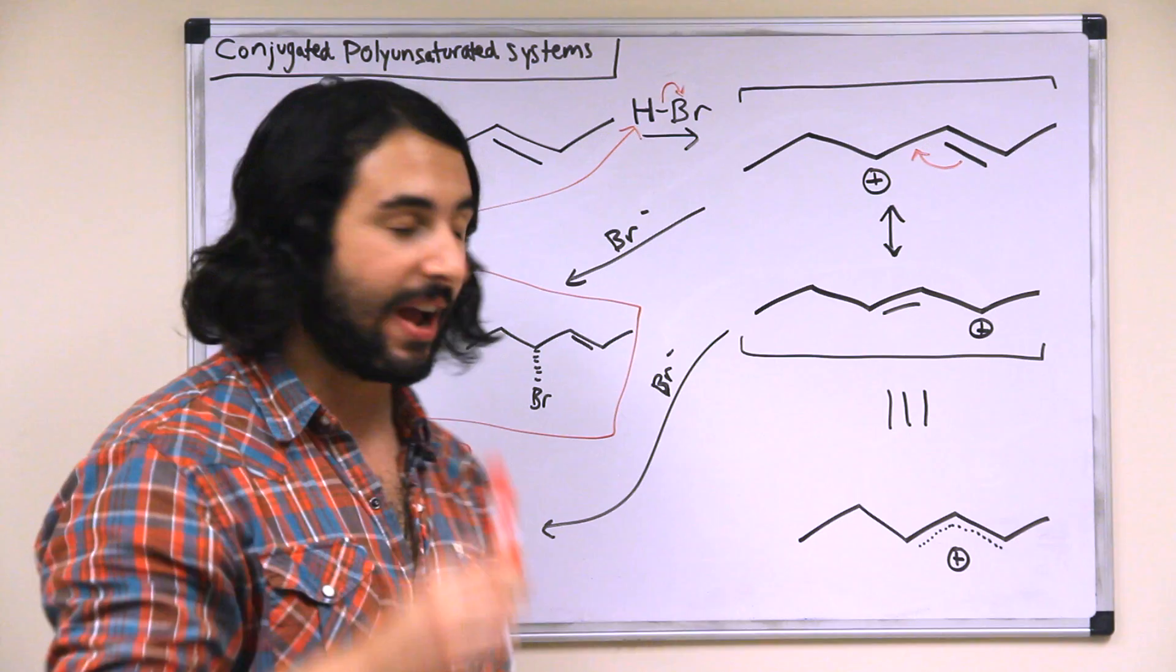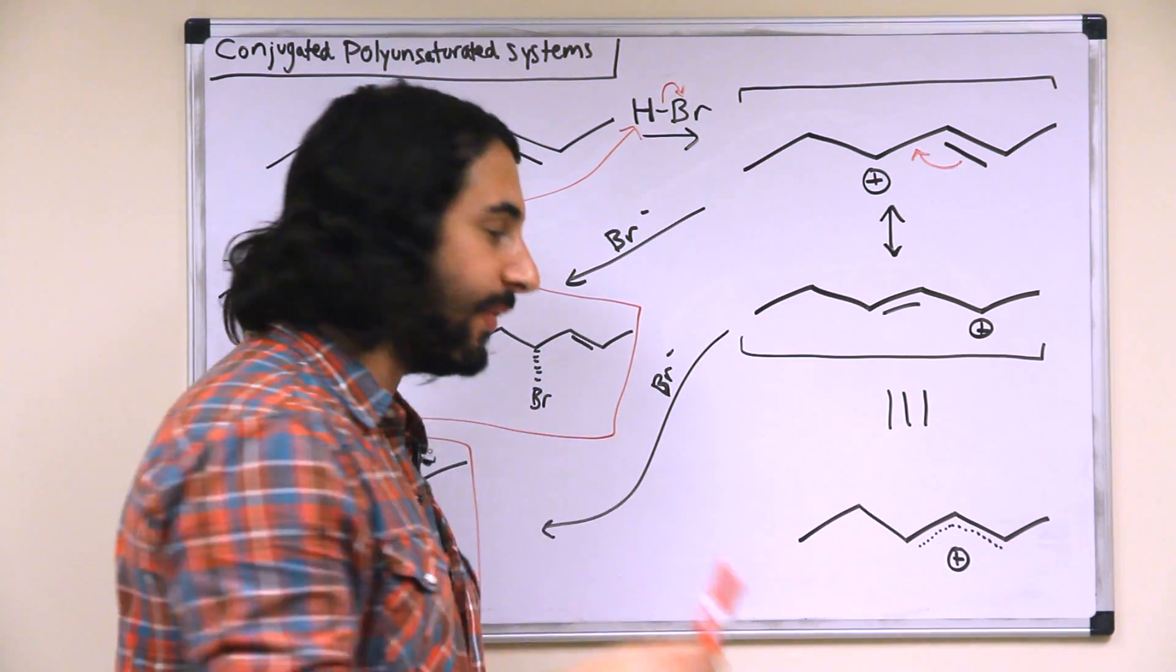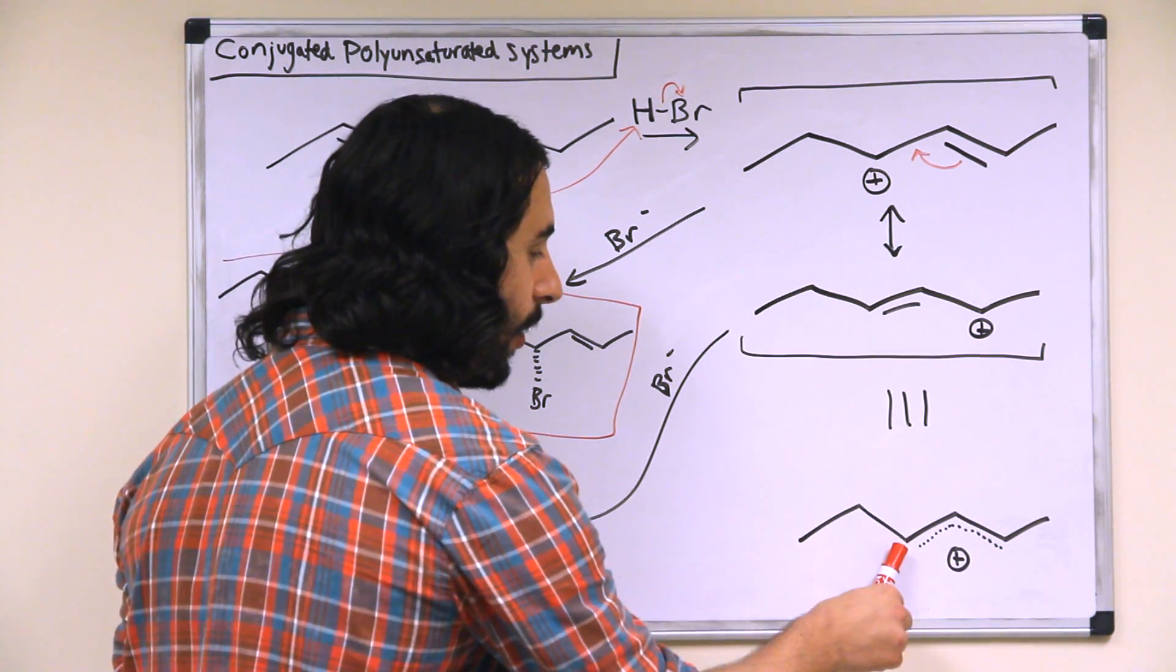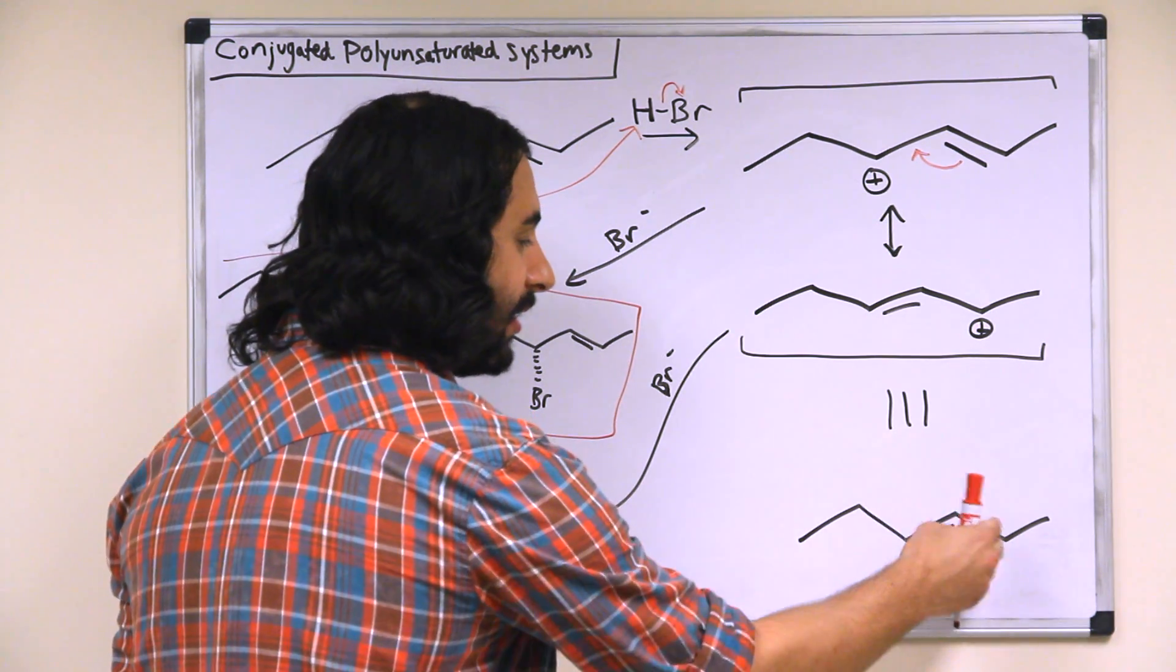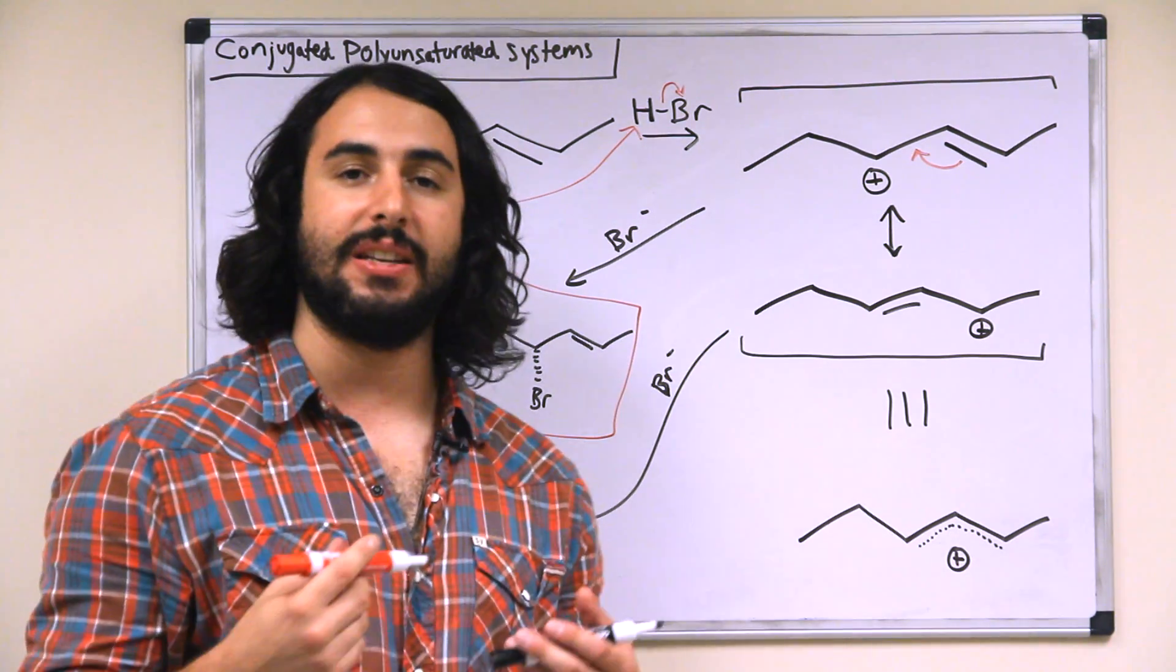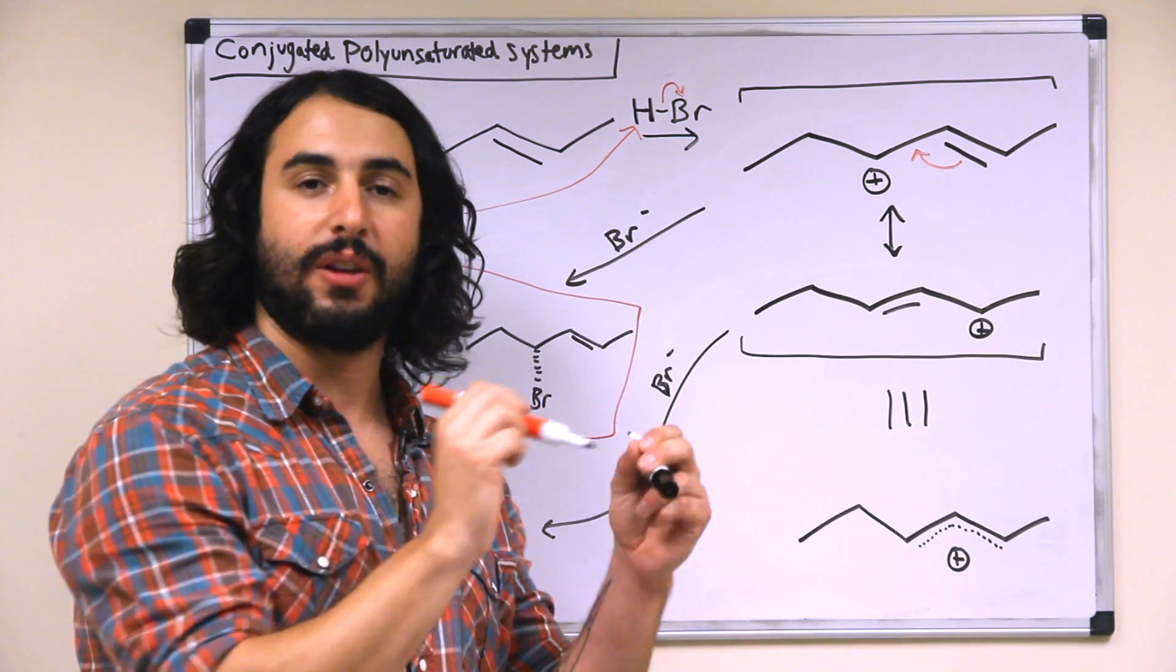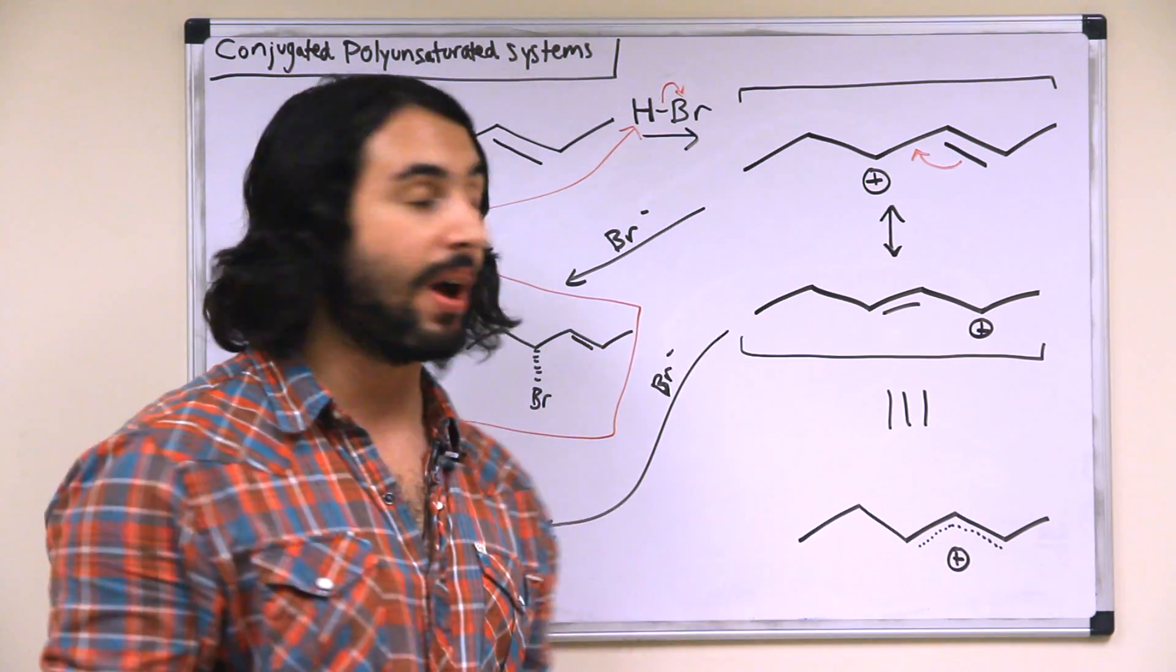So as a bromide approaches this system, it is not necessarily going to have a specific preference for this carbon over this carbon. It can either approach this carbon pushing the electron density back over to this side, or it can approach here and push the electron density back over to that side. So what has to happen is that we need to draw another step in the mechanism starting from each of these resonance structures to get all of the possible products.